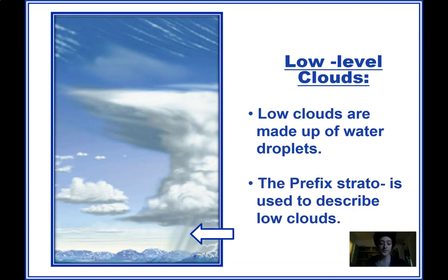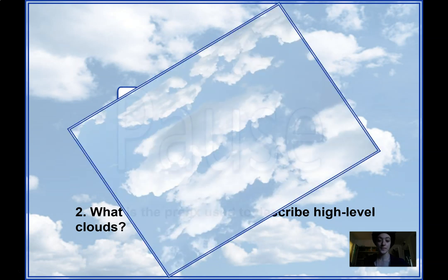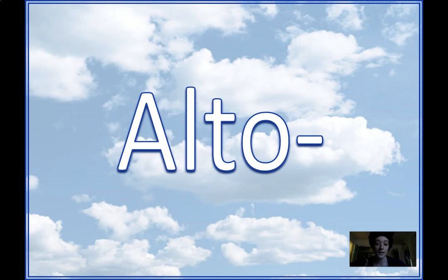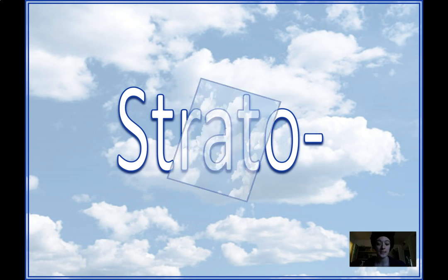Low level clouds are made up of water droplets and we use the prefix strato. So: cirro, alto, strato. Anytime you see strato at the beginning of a word, you know it's a low cloud. So pause your video and go to your Google Form — this is question number two: what is the prefix used to describe high level clouds? The answer is cirro. Cirro or cirrus clouds are usually very high in the sky, alto is in the middle, and strato is at the bottom, closest to us.